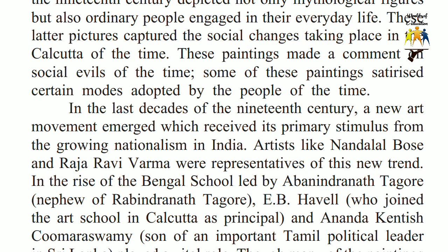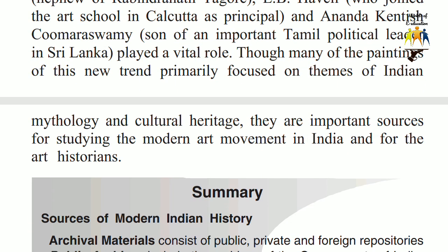Some of these paintings satirized certain modes adopted by the people of the time. In the last decades of the 19th century, a new art movement emerged which received its primary stimulus from the growing nationalism in India. Artists like Nandlal Bose and Raja Ravi Varma were representatives of this new trend. In the rise of the Bengal school, helped by Abanindranath Tagore (nephew of Rabindranath Tagore), E.B. Havell who joined the art school in Calcutta as principal, and Ananda Kentish Coomaraswamy, son of an important Tamil political leader in Sri Lanka, played a vital role. Though many of the paintings of this new trend primarily focused on themes of Indian mythology and cultural heritage, they are important sources for studying the modern art movement in India and for art historians.